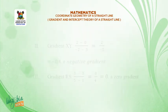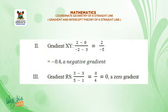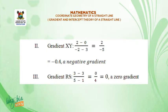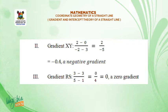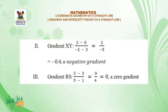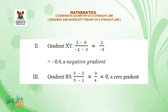Roman figure two: gradient of XY = (2 - 0) / (-2 - 3) = 2 / -5 = -0.4, a negative gradient. Roman figure three: gradient of RS = (3 - 3) / (5 - 1) = 0 / 4 = 0, a zero gradient.